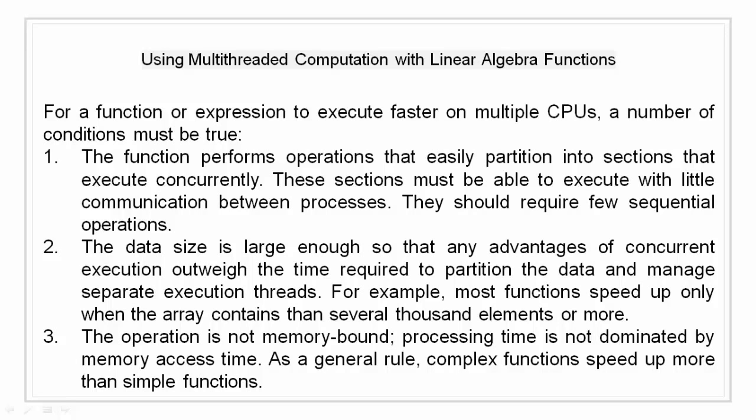The third condition is that the operation should not be memory-bound, so as to avoid processing time being dominated by the memory access time. As a general rule, complex functions speed up more than simple functions. The matrix multiply (X*Y) and matrix power (X^p) operators show significant increase in speed on large double precision arrays, generally on the order of greater than 10,000 elements. The matrix analysis functions such as determinant, condition number, and EIG also show significant increase in speed on large double precision arrays.